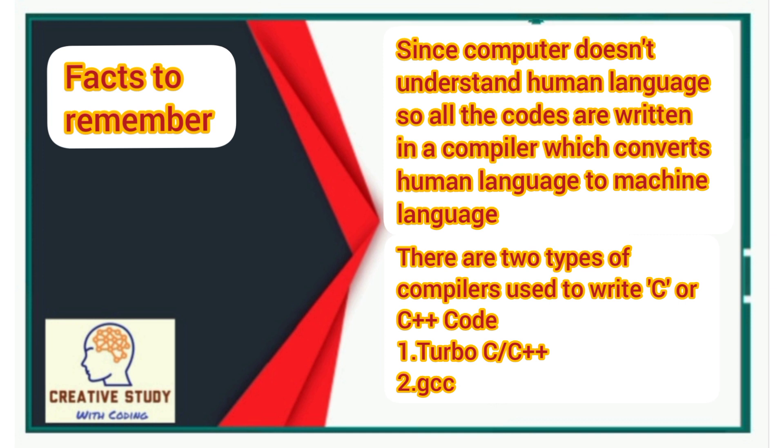There are two types of compilers used to write C or C++ code: Turbo and GCC.